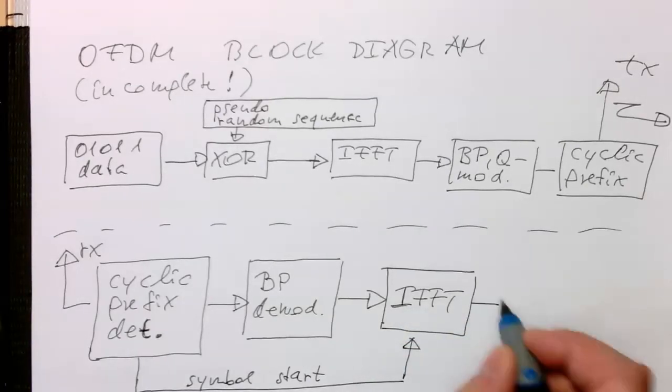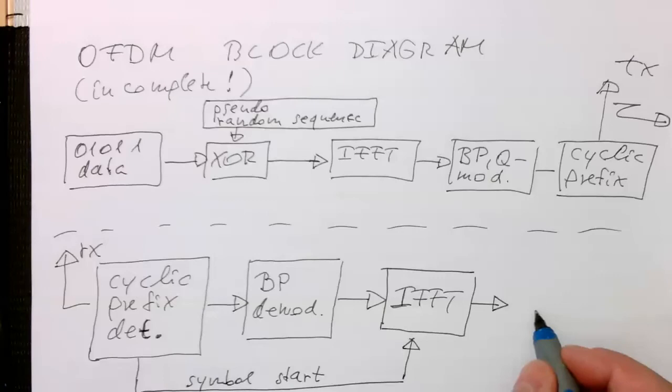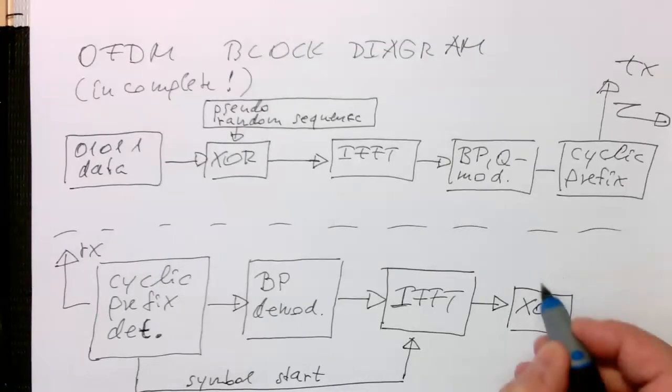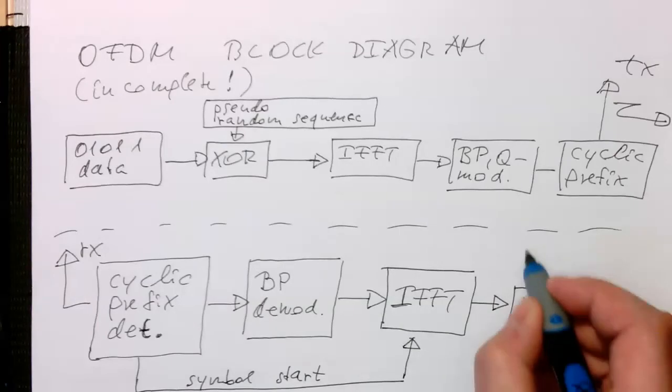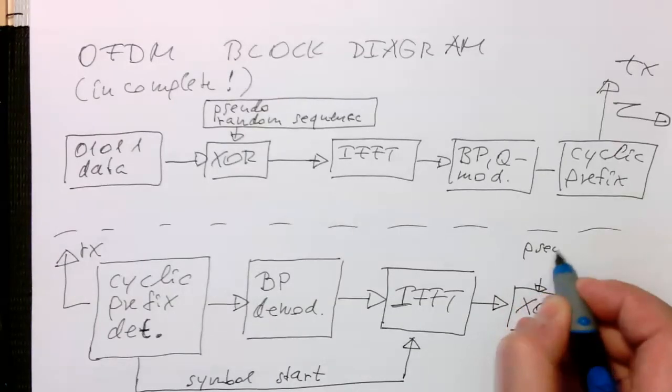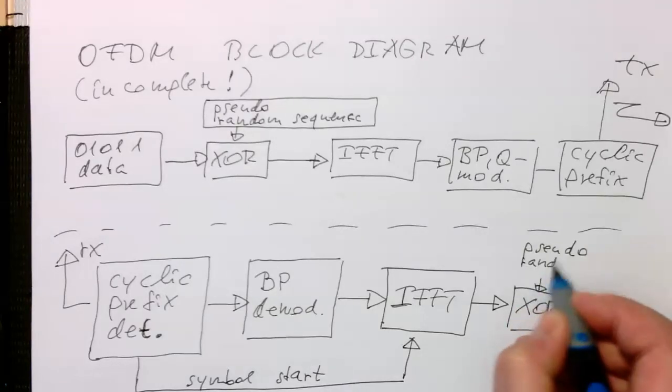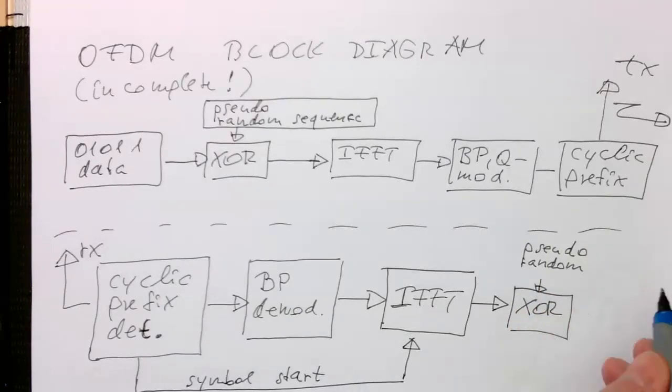Once we've got our data back in frequency coefficients, we do our XOR operation. We use the same pseudorandom sequence again that we used on the transmitter.